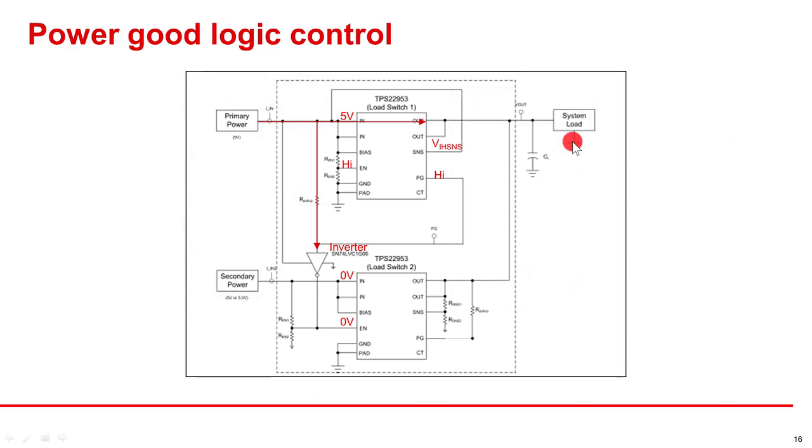When sense voltage goes beyond the VIH sense level and enable is above its VIH level, the PG pin asserts high. The inverter holds the enable of the second device low. When the second supply rises and the first device falls, the PG pin asserts low and the enable on the second device is able to go high.